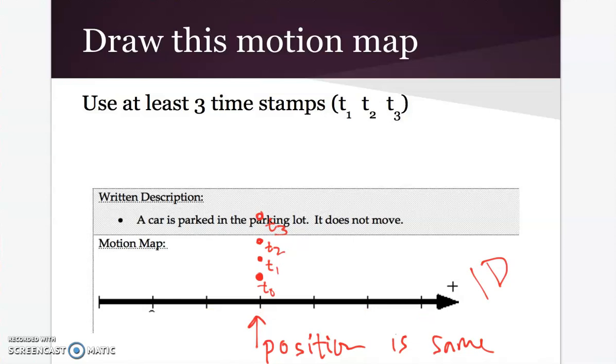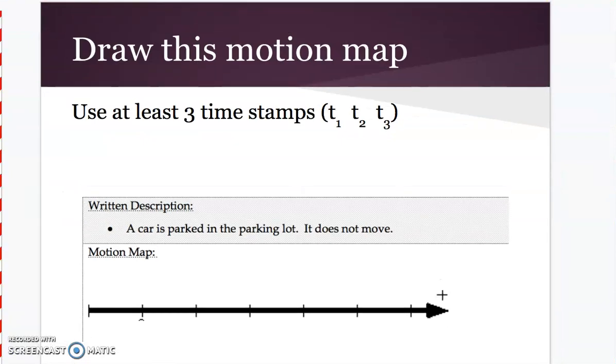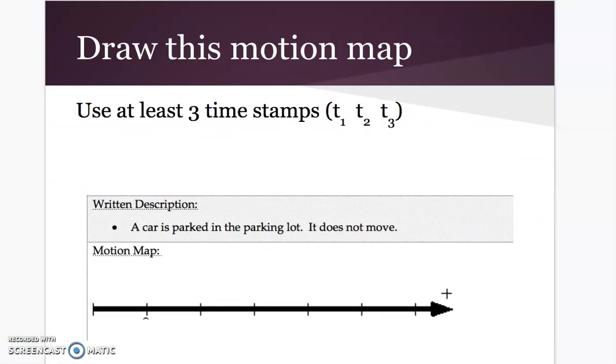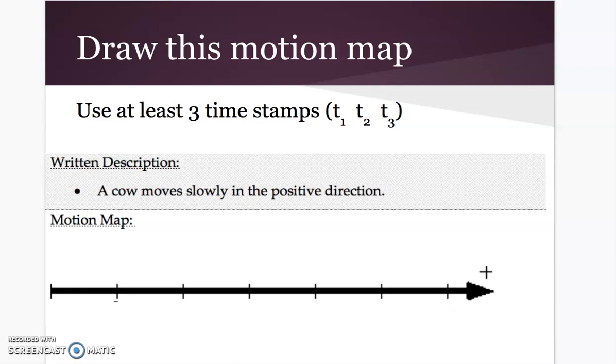So hopefully that's not too bad. Let's try one more together. I'll do the next one with you as well. So now take a moment and try drawing a cow that moves slowly in the positive direction. So try drawing the motion map. And again, you're not doing a picture of a cow. You're drawing the motion map, which is a dot with an arrow for its velocity. So try this yourself. Pause the video.